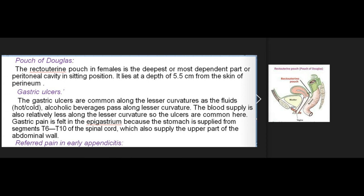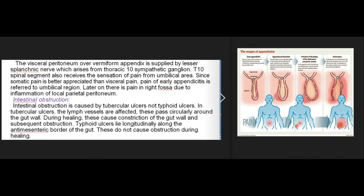Pouch of Douglas: the rectouterine pouch in females is the deepest part of the peritoneal cavity in the sitting position, lying at a depth of 5.5 cm from the skin of the perineum. Gastric ulcers: common along the lesser curvature as fluids and alcoholic beverages pass along it, and blood supply is relatively less. Gastric pain is felt in the epigastrium because the stomach is supplied from segments T6-T10 of the spinal cord, which also supply the upper part of the abdominal wall. Referred pain in early appendicitis: the visceral peritoneum over the vermiform appendix is supplied by the lesser splanchnic nerve arising from the thoracic 10th sympathetic ganglion. T10 spinal segment also receives pain sensation from the umbilical area; since somatic pain is better appreciated than visceral pain, pain of early appendicitis is referred to the umbilical region. Later there is pain in the right iliac fossa due to inflammation of the local parietal peritoneum.